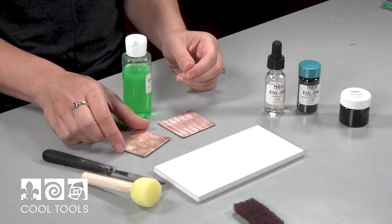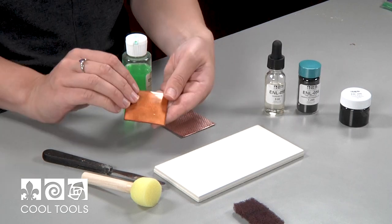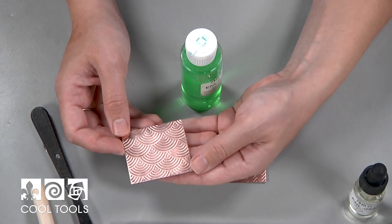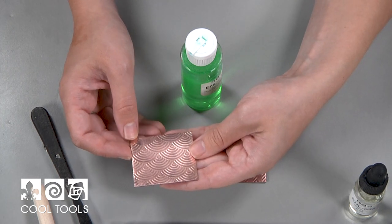I've prepped this metal just like I would for any other enameling project by applying a counter enamel to the back and then cleaning the front surface with surfactant and the Scotch-Brite. So now we're ready to apply our fine line black.